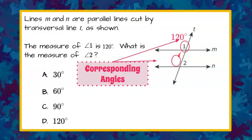So angles 1 and this angle right here to the left of angle 2, these are corresponding angles, and we know that corresponding angles are congruent, so I know that this angle is 120 degrees.